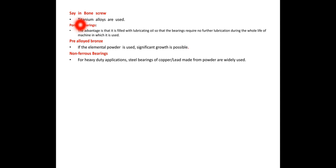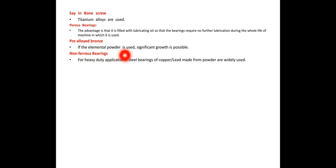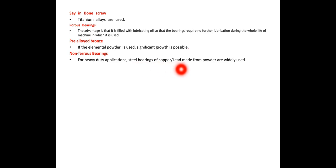In bone screws, titanium alloys are used. Porous bearings have the advantage of being pre-filled with lubricating oil so that they require no further lubrication. If elemental powder is used in pre-alloyed bronze, significant growth is possible. For heavy-duty applications, steel bearings of copper-lead made from powder are widely used.